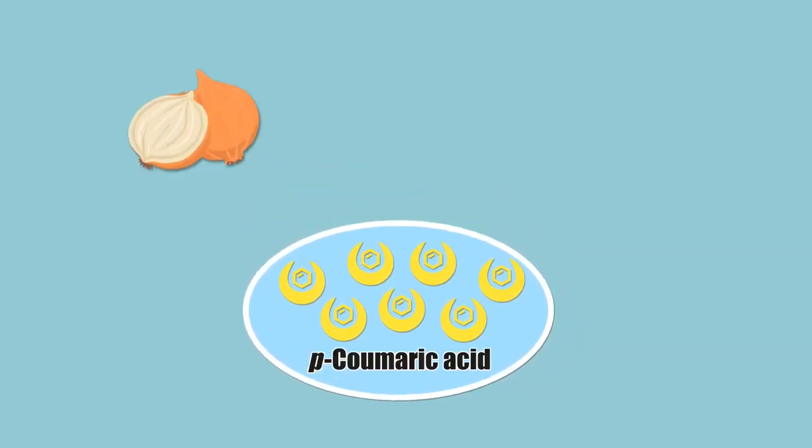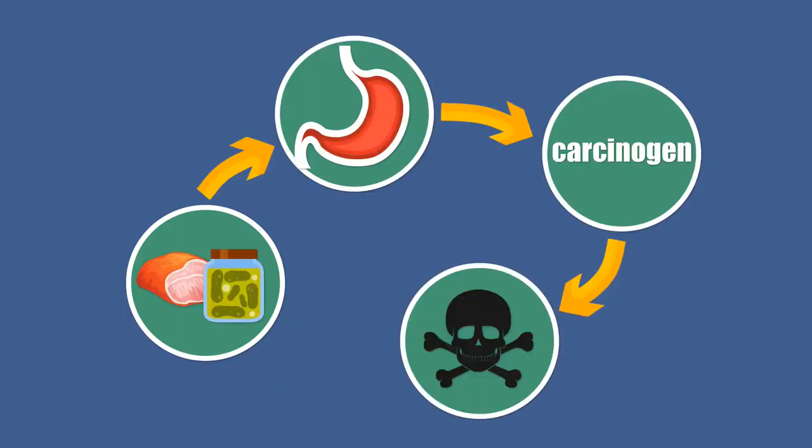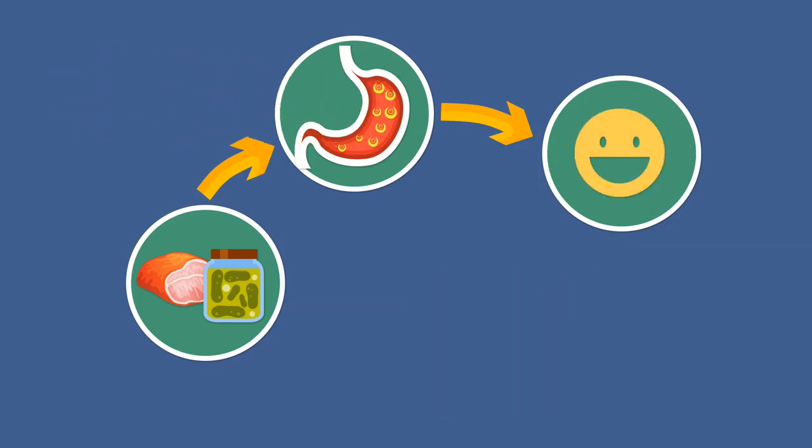For example, P-cumeric acid is a phytochemical in onions, oranges, and berries. It can help inhibit the formation of nitrosamine, a carcinogen found in preserved foods.